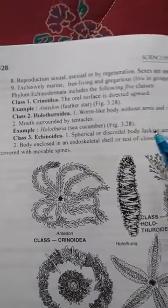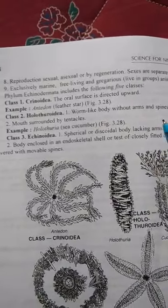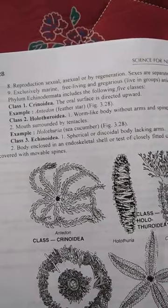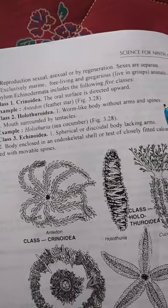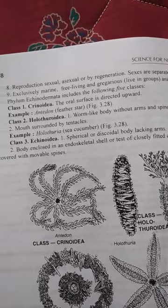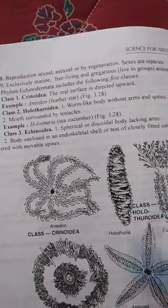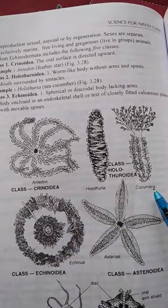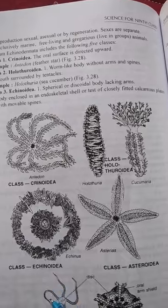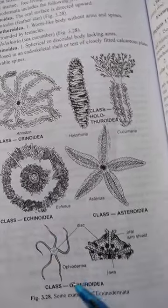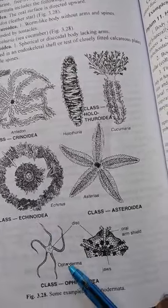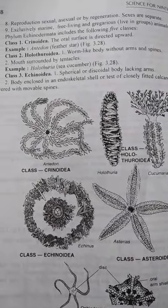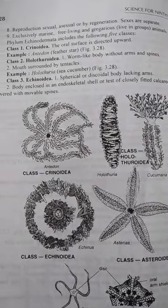Reproduction can be sexual, asexual, or by regeneration. Sexes are separate, and some may be hermaphrodite. They are exclusively free-living. Examples include Asteroidea, Ophiothrix, Cucumaria, and Echinoidea, among other classes of Echinodermata.